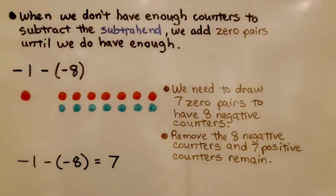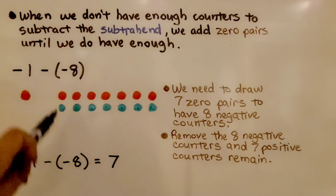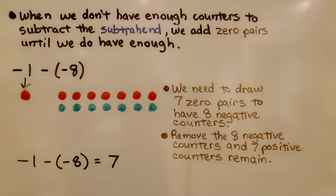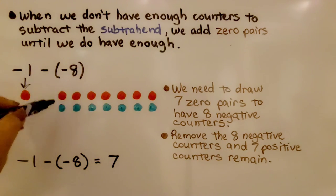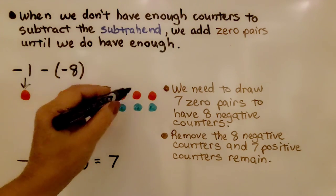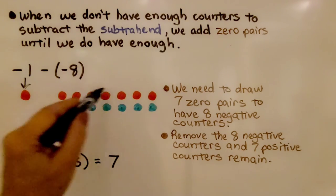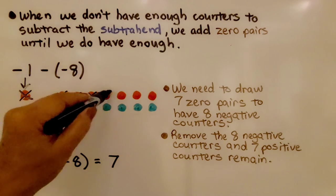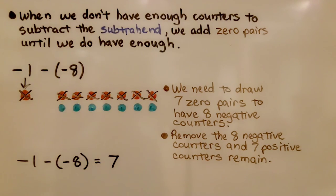When we don't have enough counters to subtract the subtrahend, we add zero pairs until we do have enough. We have negative one and need to take away eight negative counters. We only have one, so we add seven zero pairs of a negative and positive — one, two, three, four, five, six, seven zero pairs. Now we do have eight negatives, and we remove those eight negatives. Seven positive counters remain. Negative one minus negative eight is equal to positive seven.